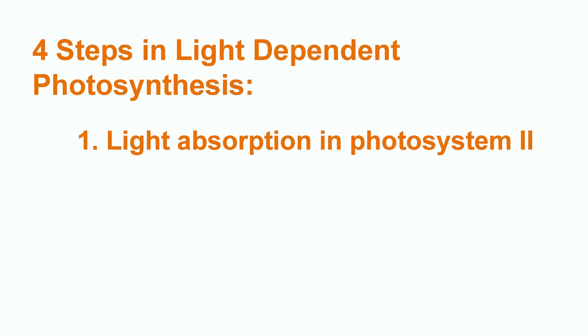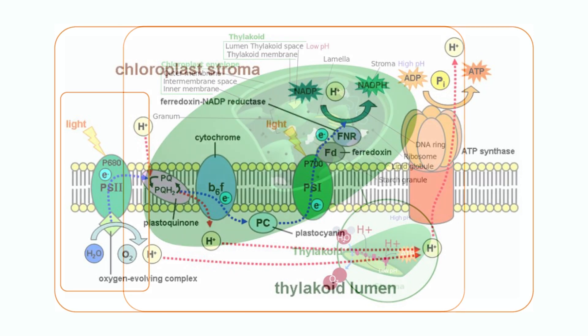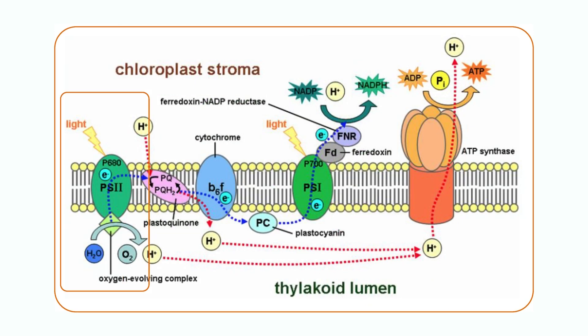The first step is light absorption in photosystem 2. Light is absorbed by the chlorophylls found in the thylakoids of chloroplasts. The light energy is absorbed by photosystem 2, which is a multi-protein complex that contains different types of chlorophylls.